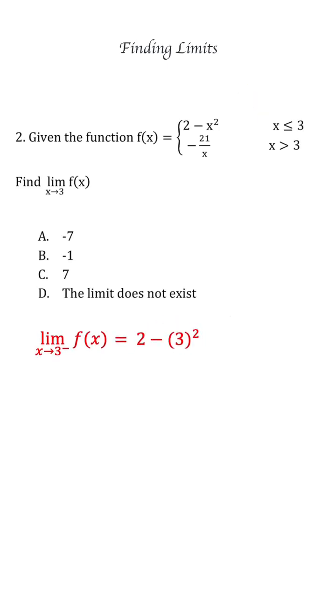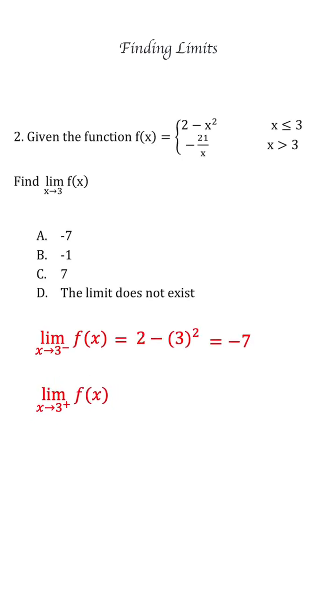And we check the second part, which is limit as x approaches to 3 plus. So where do we replace the 3 now? We replace it in minus 21 over x because it's x greater than 3. So we can find that x approaches 3 from right, so we write minus 21 over x, which is equal minus 21 over 3.